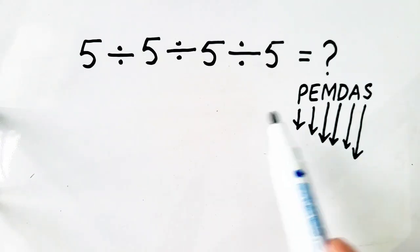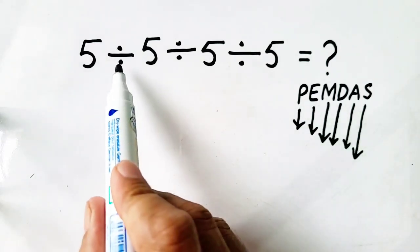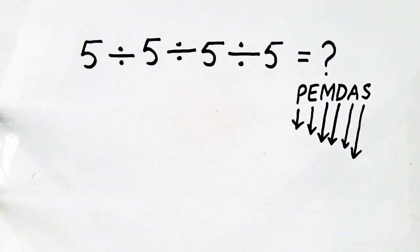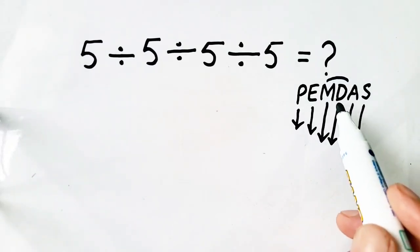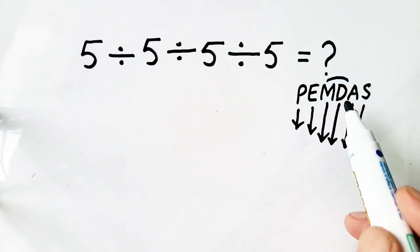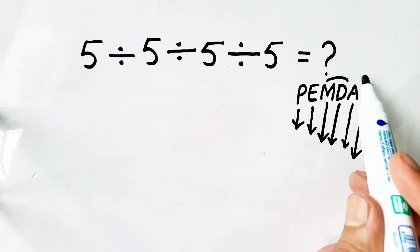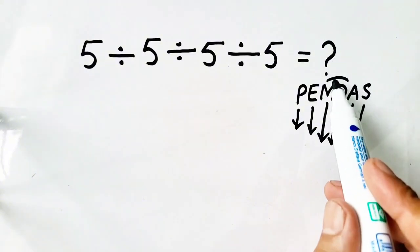But here only division function is present. When multiplication and division are in the same question, then we will start from left to right.